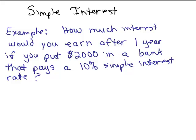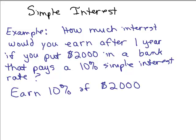Many of you could do this without knowing any kind of formula. You would earn 10% of $2,000. I think of this as a fraction — 10% is one-tenth of $2,000. And then you can cancel out: 10 goes into that number, so it's going to be $200.